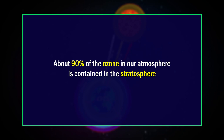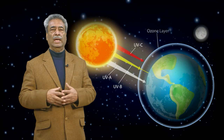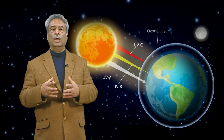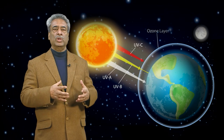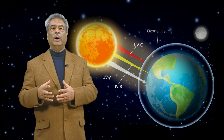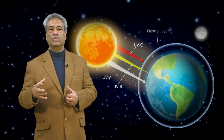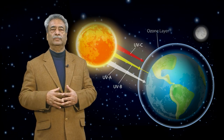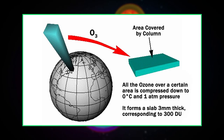About 90 percent of the ozone in our atmosphere is contained in the stratosphere. Ozone concentrations are greatest between 20 and 40 kilometers, where they range from about 2 to 8 parts per million. If all the ozone were compressed to the pressure of air at sea level, it would be only 3 millimeters thick.